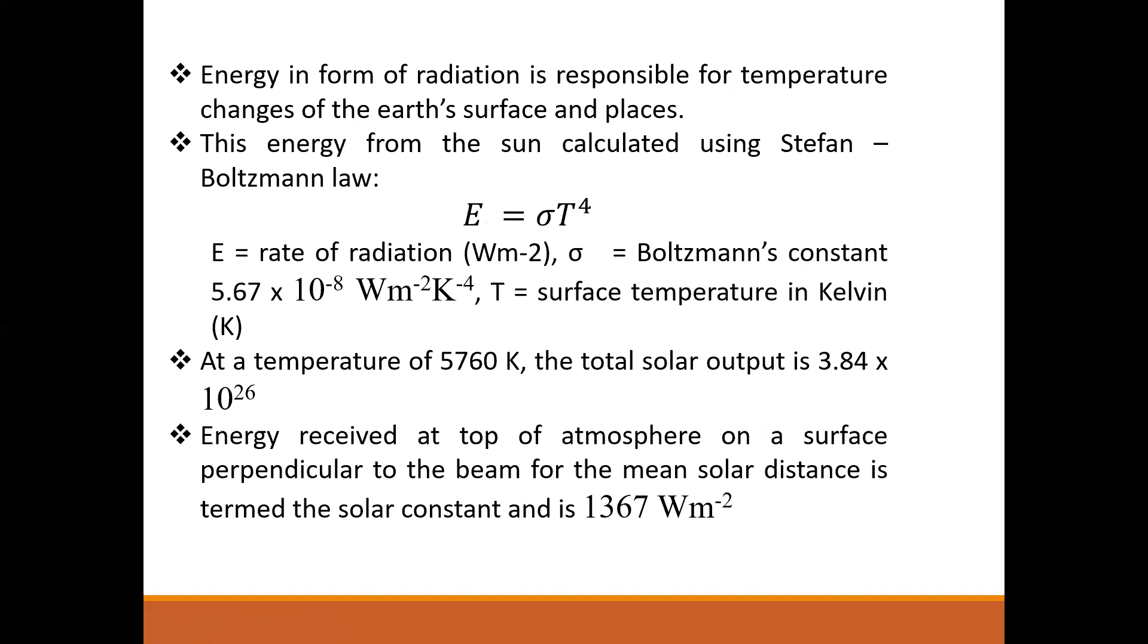The energy from the sun has a relationship with temperature. This was expressed by Stefan in the Stefan-Boltzmann law, where the rate of radiation equals the Boltzmann constant times the temperature in Kelvin to the power 4. The Boltzmann constant is 5.67 times 10 to the power negative 8. At 5700 Kelvin, the total solar output is 3.84 times 10 to the power 26.